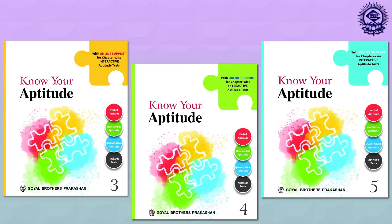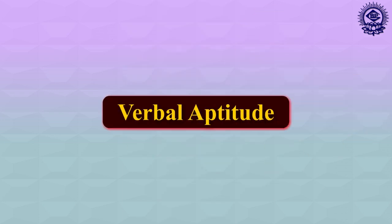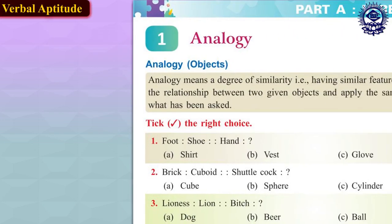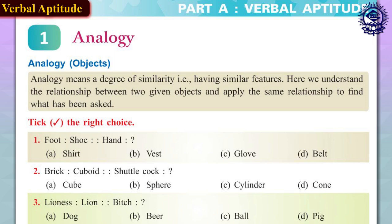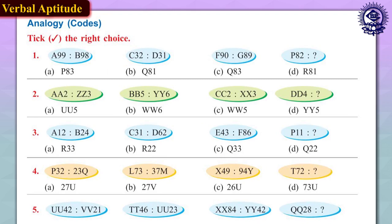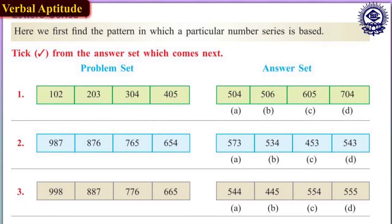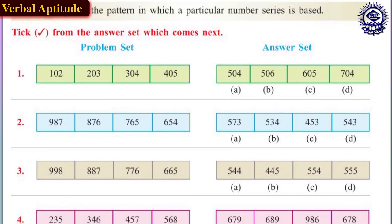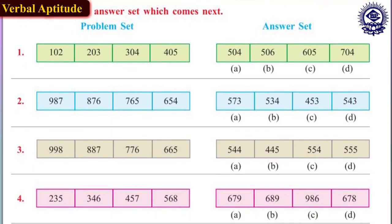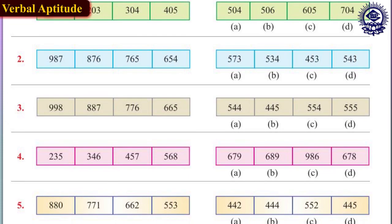Each book for classes 3 to 5 has been divided into 4 sections namely verbal aptitude, non-verbal aptitude, quantitative aptitude and aptitude tests. Verbal aptitude can assess a person's ability to spell words correctly, use correct grammar, understand word meanings, understand word relationships and or interpret detailed written information. Having verbal reasoning skills will allow your child to develop qualities such as perception, understanding and solving complicated subject questions, empathy and logical reasoning as well as ensuring they have great vocabulary.